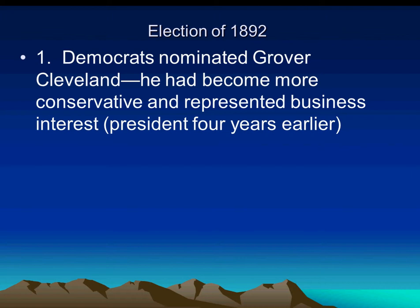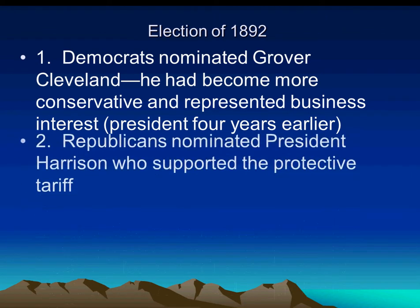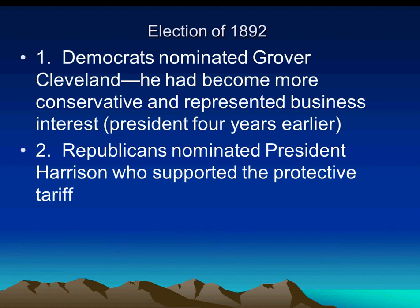In the election of 1892, Grover Cleveland will run again for president. He will win the nomination in his party, and he will be successful running against President Harrison. Harrison had been elected in 1888.